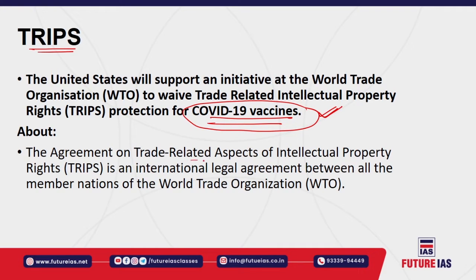The Agreement on Trade Related Aspects of Intellectual Property Rights, TRIPS, is an international legal agreement signed between WTO member nations. It is the most comprehensive multilateral agreement on intellectual properties. TRIPS plays a crucial role in trade in creativity and knowledge, resolving disputes related to intellectual property trade, and assures WTO member countries the ability to achieve certain domestic policy objectives.